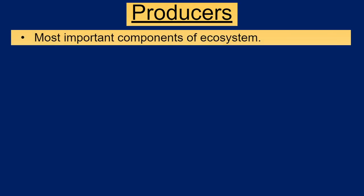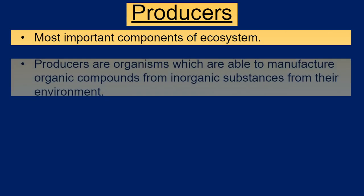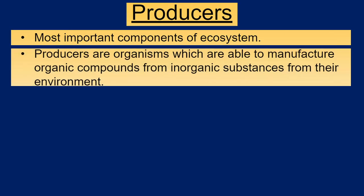Producers are one of the most important components of the ecosystem. The first thing in any ecosystem is the harvesting of sunlight. That harvested sunlight along with carbon dioxide and water is converted into food material. These producers are organisms capable of manufacturing organic compounds from inorganic substances in their environment — they make use of sunlight, carbon dioxide, and water to produce organic food.